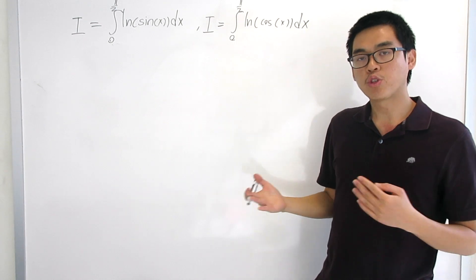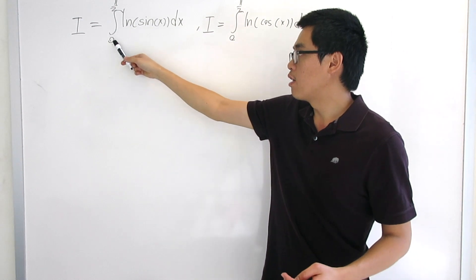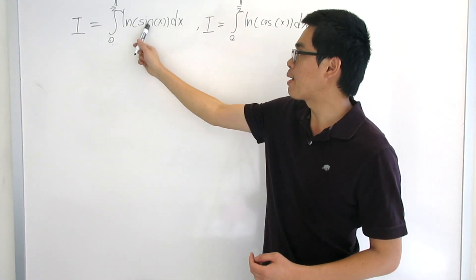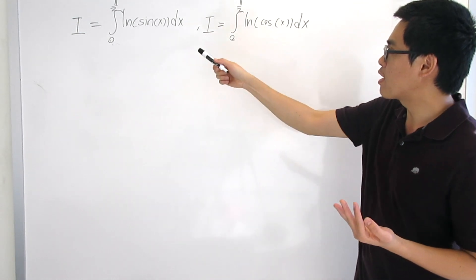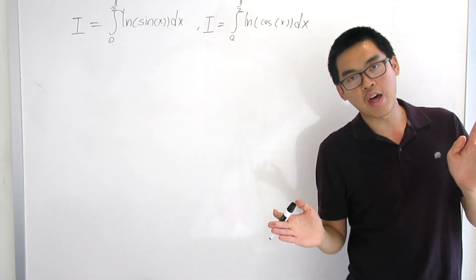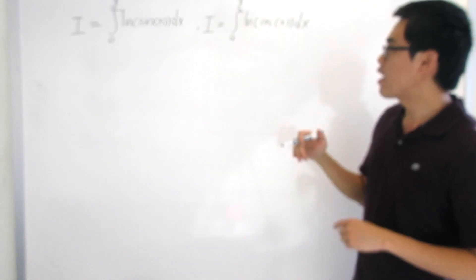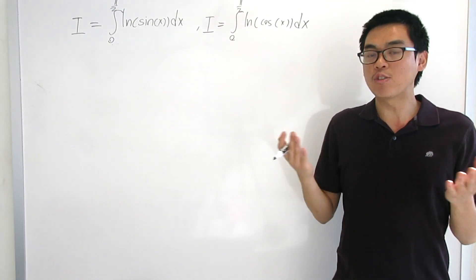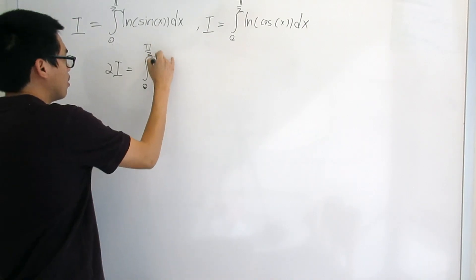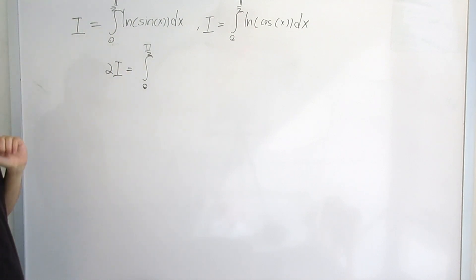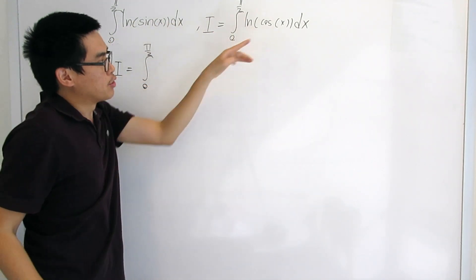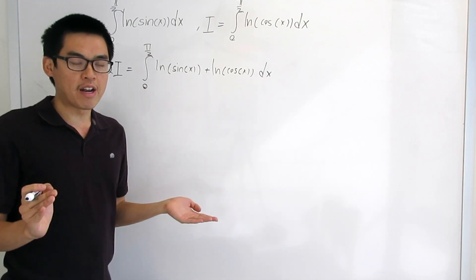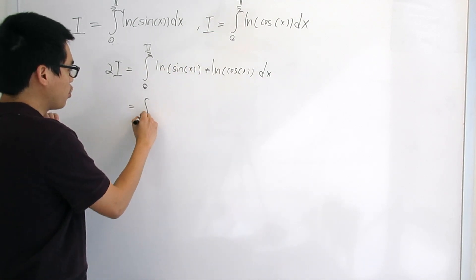Since u is just a dummy variable, we replace u with x. So we have: I equals the integral from 0 to π/2 of ln(sin x) dx, and also I equals the integral from 0 to π/2 of ln(cos x) dx. We have two expressions for I. Rather than equating them — which would lose I — we want to add them together to keep I in our equation. Since both integrals share the same bounds, we can combine them.